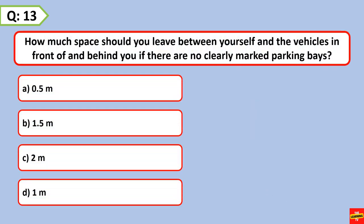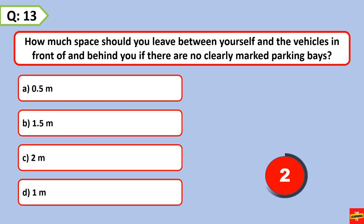How much space should you leave between yourself and the vehicles in front of and behind you if there are no clearly marked parking bays? 1 meter.